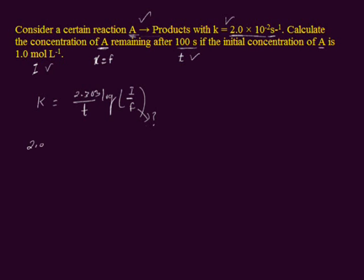K value is given 2.0 × 10^-2 per second = 2.303 divided by time. Time is 100 seconds. Log(initial amount is 1.0 mole per liter / final amount we have assumed is X).